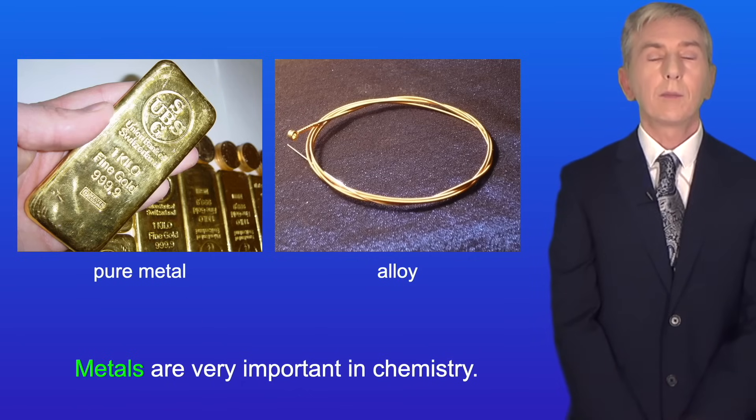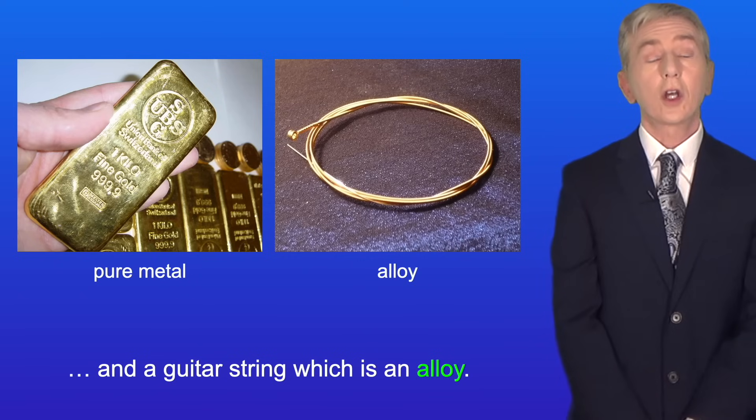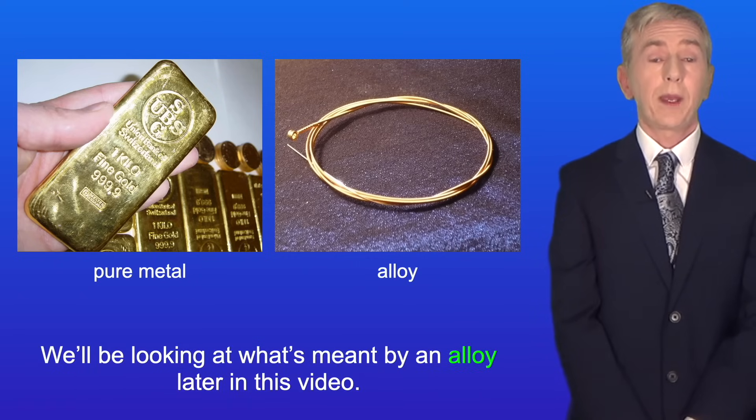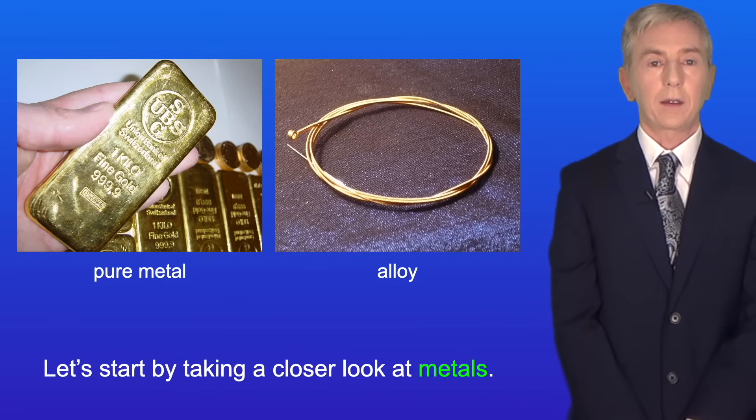Now metals are very important in chemistry. I'm showing you here a gold bar which is essentially pure gold and a guitar string which is an alloy. We'll be looking at what's meant by an alloy later in this video. So let's start by taking a closer look at metals.